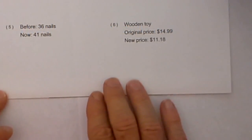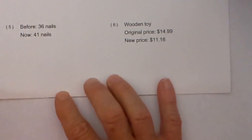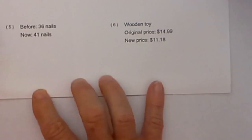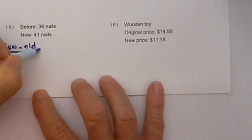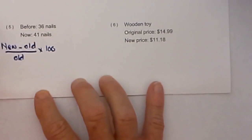Let's look at percentage change. We'll use the formula: new minus old, divided by old, times 100. If you don't like the term 'old,' you can say 'original.'